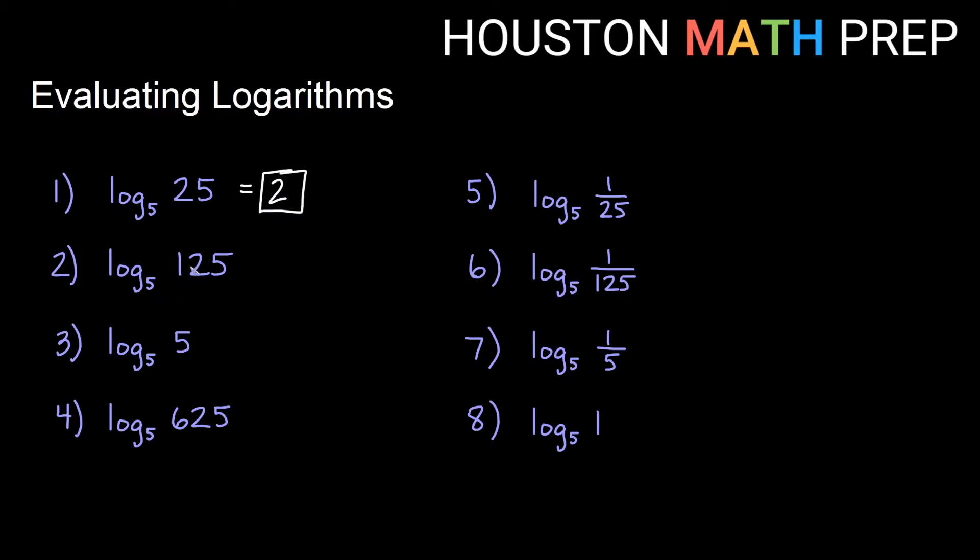Log base 5 of 125. 5 to what power gives us 125? Well this number is 5 times this number and this number was 2. So 5 cubed gives us 125. Remember with logarithms the answer is the exponent.